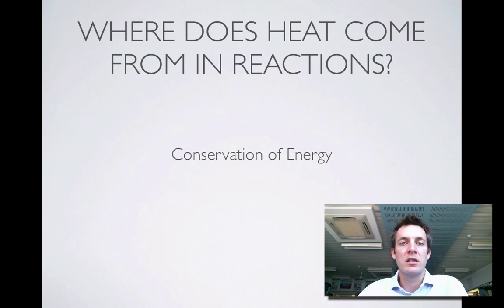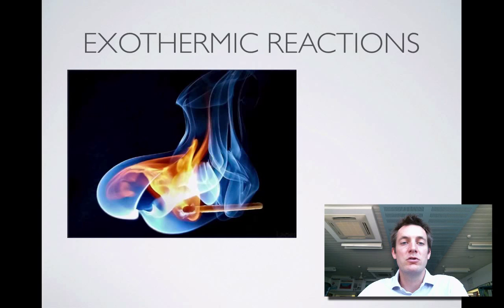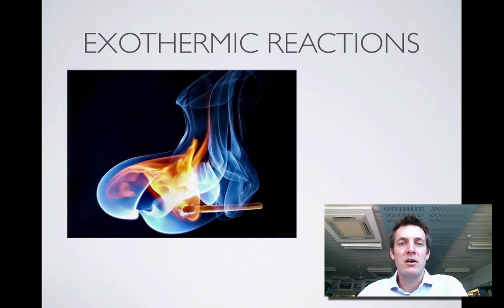There are two main kinds of reaction we see in energetics. First, there are reactions that get hot — these are called exothermic reactions. Heat is leaving the system, so we feel them getting hot because heat is escaping. Most burning reactions are exothermic — they release a lot of heat. These are reactions where the chemical potential energy of the system must be dropping, because we're turning that potential into heat which escapes from the system.